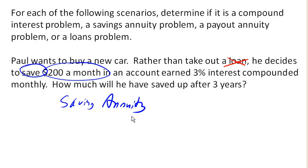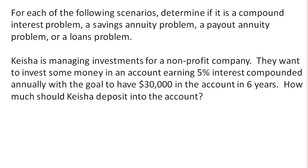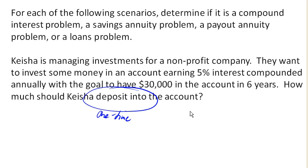Keisha is managing investments for a non-profit company. They want to invest some money in an account earning 5% interest compounded annually, with a goal to have $30,000 in the account in 6 years. How much should Keisha deposit into the account? Notice here she's depositing money into the account, but it's only a one-time deposit — they're not going to be making annual or monthly deposits. They're just putting money in once and letting it sit. So because the money is just sitting there earning interest, this is a compound interest problem.